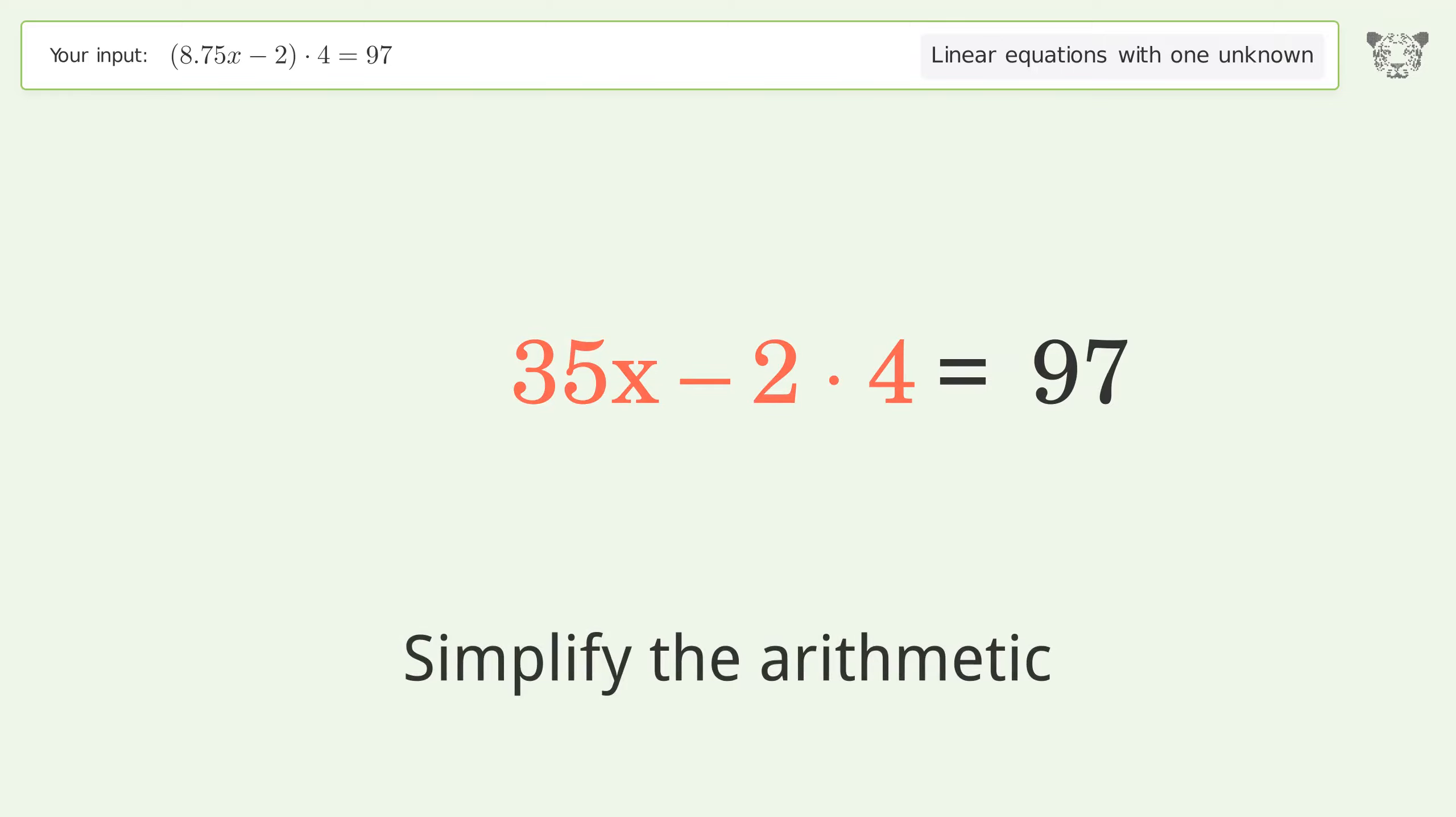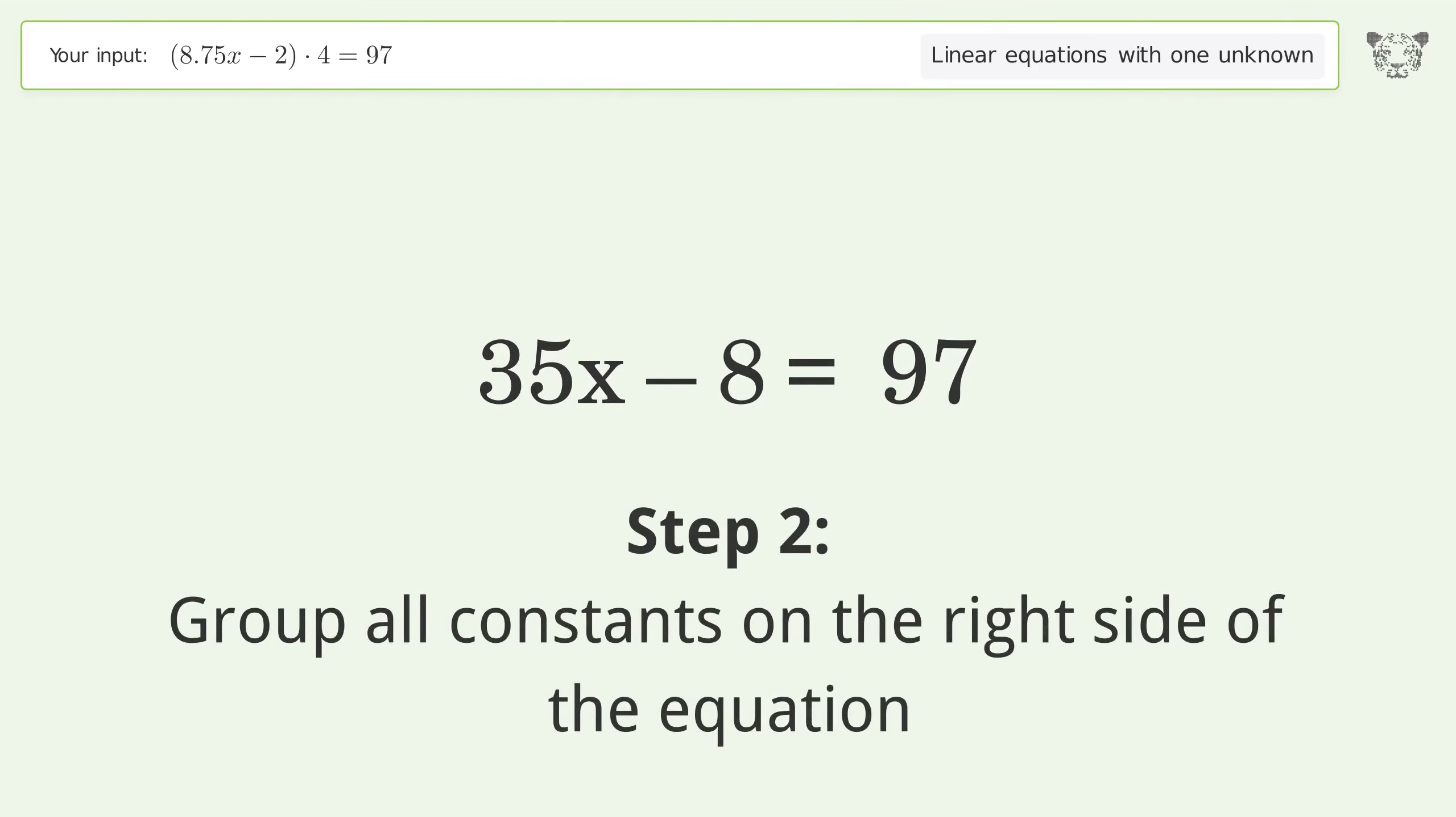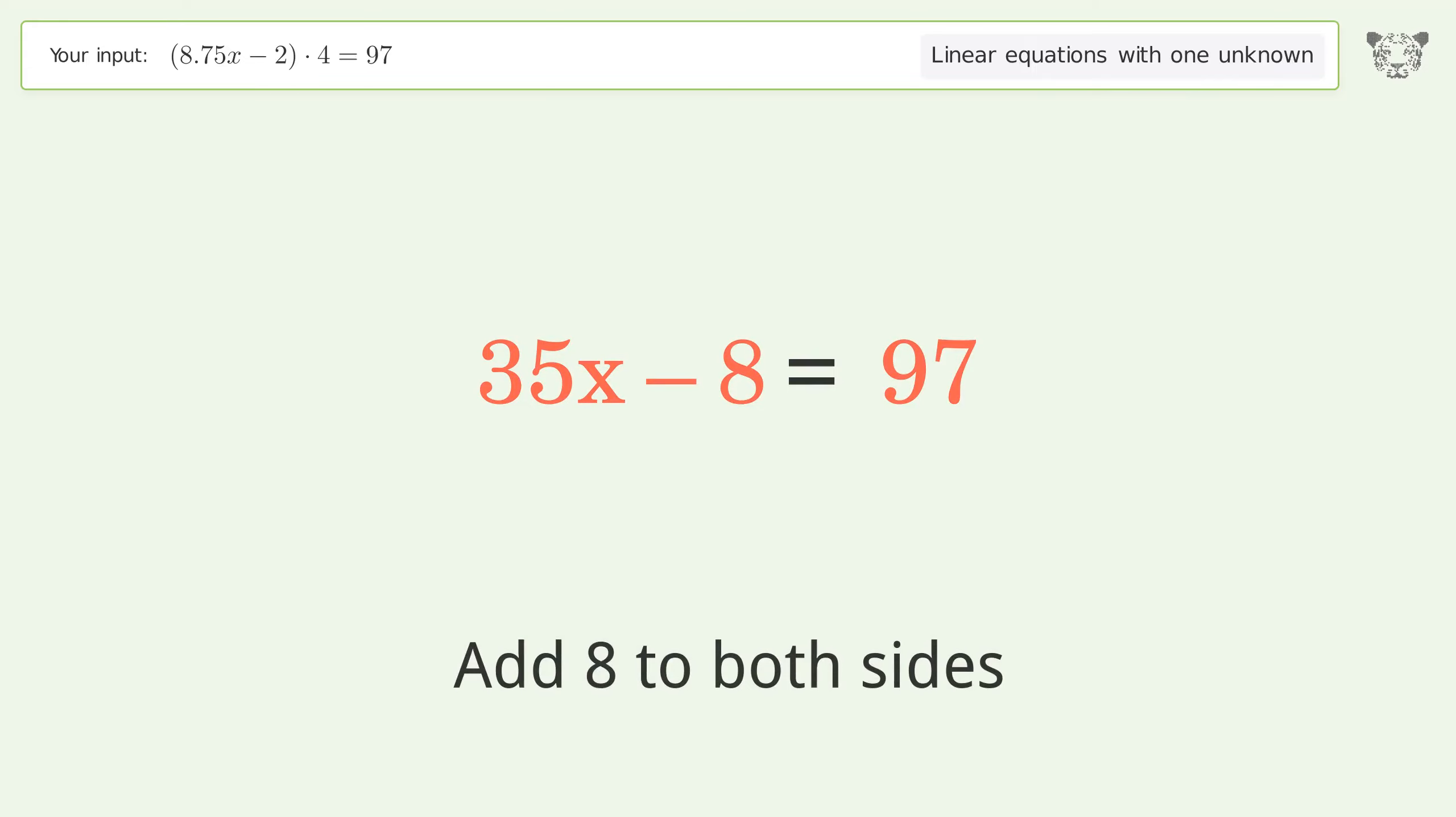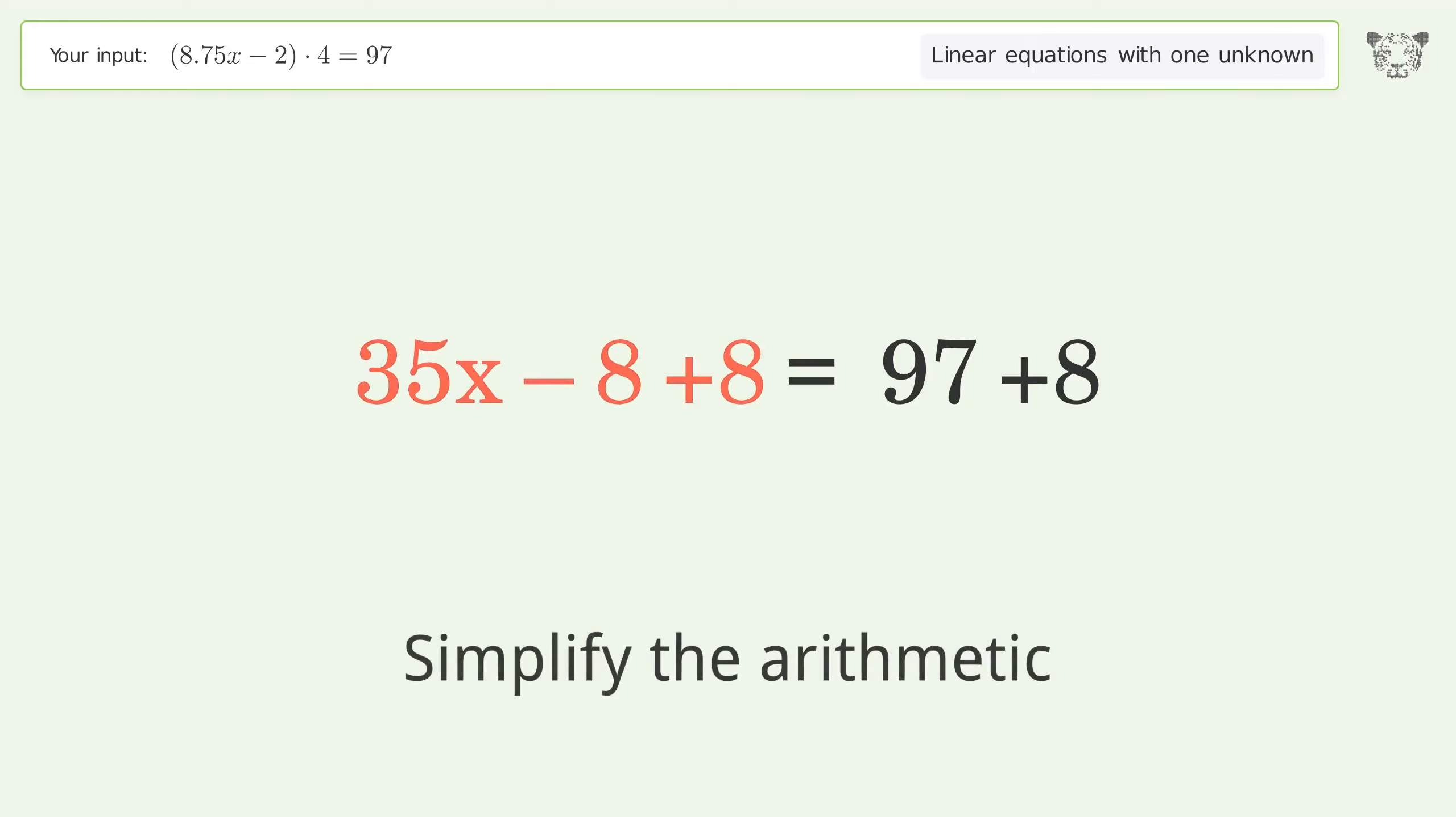Simplify the arithmetic. Group all constants on the right side of the equation. Add 8 to both sides. Simplify the arithmetic.